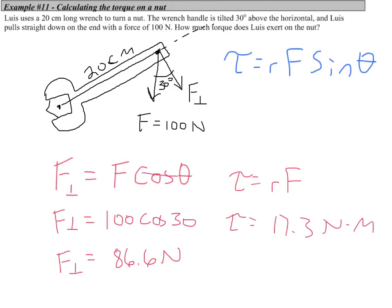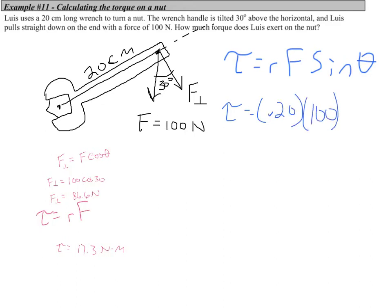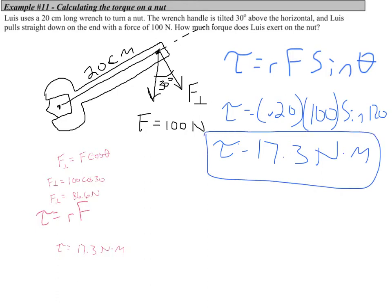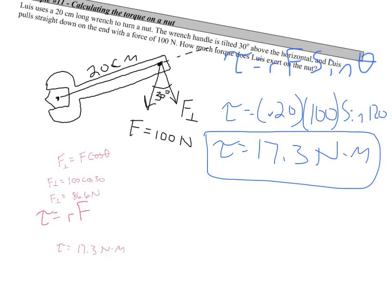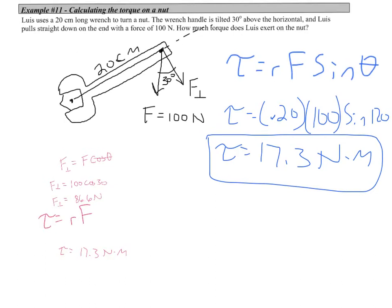Alternatively, applying directly to the torque equation: using 0.20 meters, the 100 newton force, and looking at the angle between the applied force and the radial arm — that angle is 90 plus 30, or 120 degrees — we use sine of 120 degrees and get the same result: 17.3 newton meters. However, when this wrench gets rotated it rotates in a clockwise direction. Any torque resulting in clockwise rotation is therefore negative, so the answer is negative 17.3 newton meters.